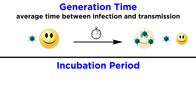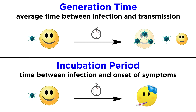The generation time is the average time between infection and transmission to a new host — or put differently, the time it takes a person to make enough virions before they can be spread to another person. The incubation time is the time from infection to the onset of clinical signs and symptoms, and it varies from person to person.